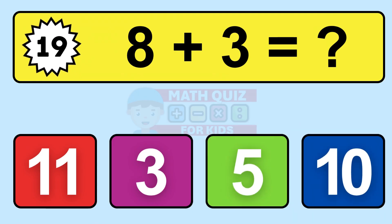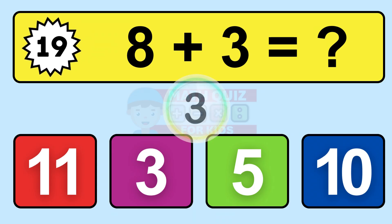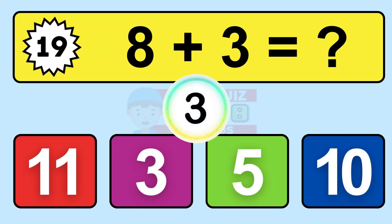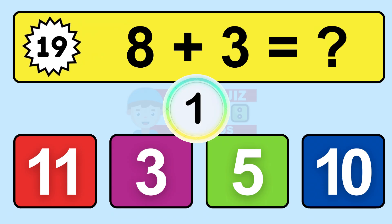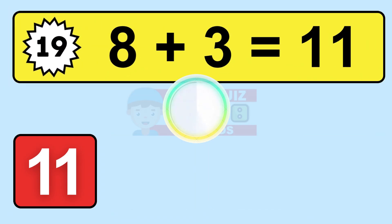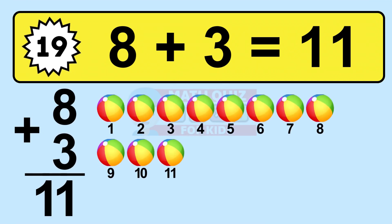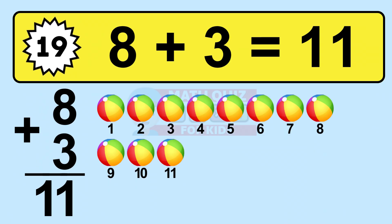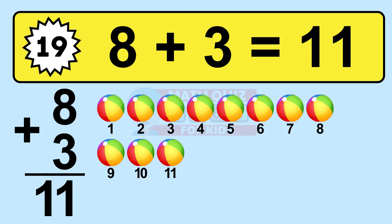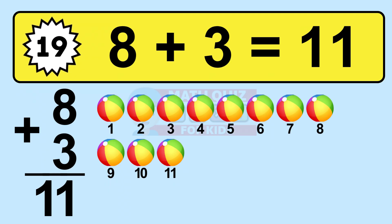Question nineteen: 8 plus 3 equals what? So the answer is 8 plus 3 is 11. Let's count it. 1, 2, 3, 4, 5, 6, 7, 8, 9, 10, 11.